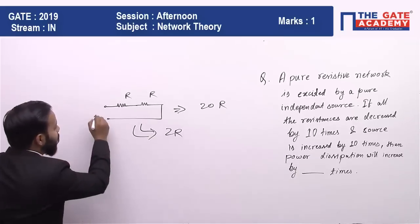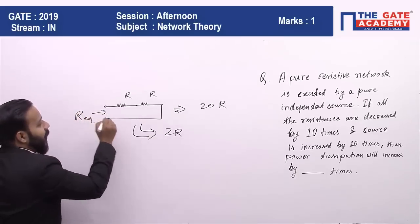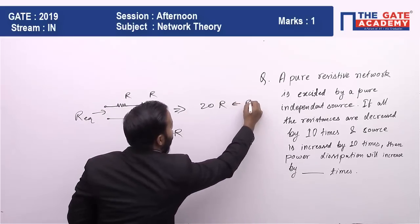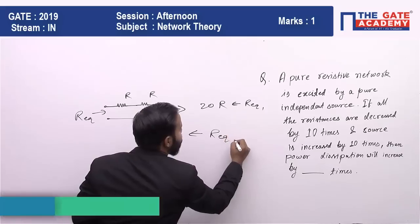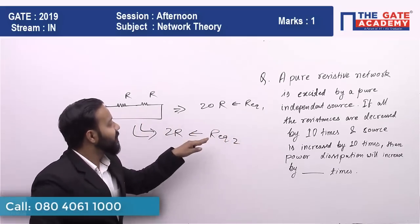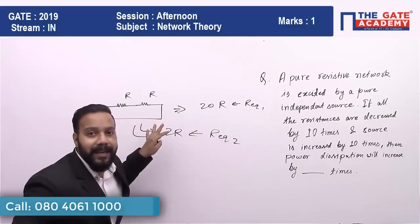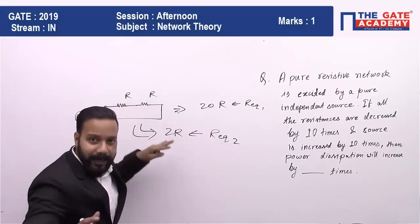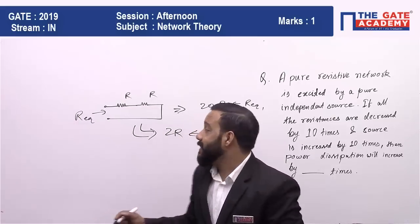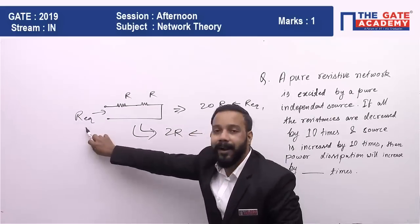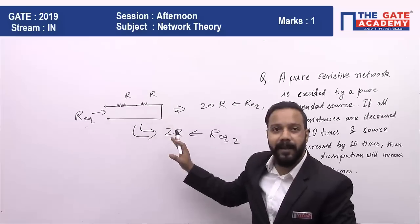If all resistances are decreased by 10 times, the equivalent resistance will also decrease by 10 times. Whatever number of times by which we are decreasing all of them, it affects the equivalent resistance the same way.